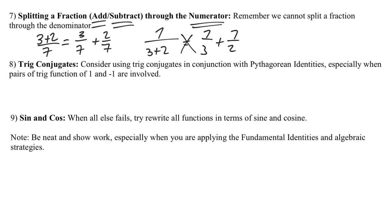Strategy eight is trig conjugates. This is going to involve usually whenever you have a one or a negative one involved. For example, let's say that we have a one plus sine x somewhere in the numerator or denominator possibly of a fraction. If I multiply that by its conjugate, that's going to give me one minus sine x, that would be the conjugate.